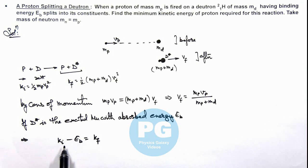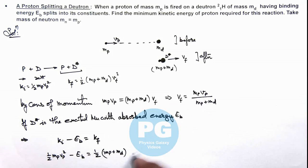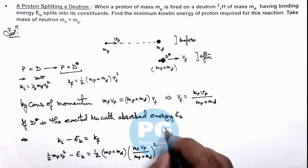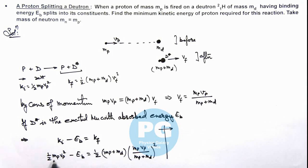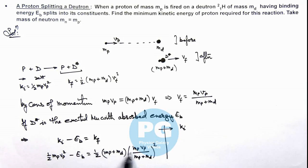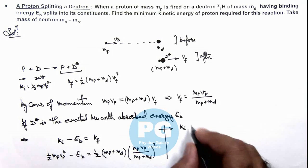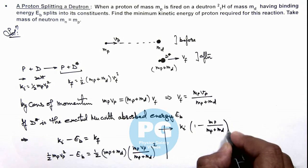Substituting values: Ki equals half mp vp squared. So Ki minus Eb equals half times (mp plus md) times vf squared, where vf equals mp vp divided by (mp plus md), whole squared. Rearranging these terms, we can take half mp vp squared common, giving Ki multiplied by (1 minus mp over (mp plus md)) equals Eb.